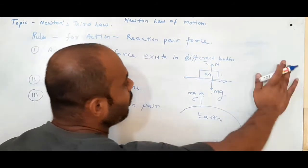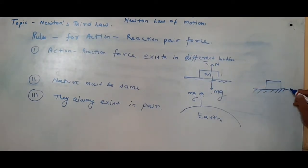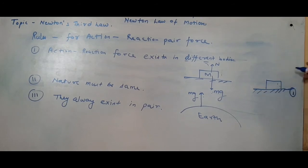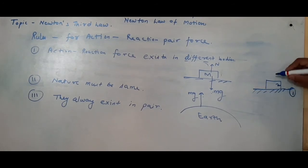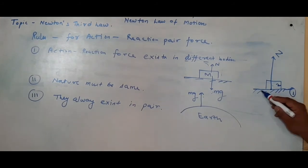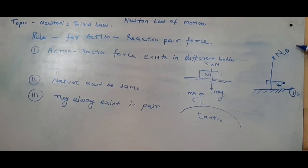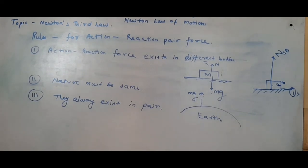Similarly, for normal reaction: let's label the surface as body 1 and the block as body 2. The surface exerts a normal reaction on the block — that is normal reaction by surface on block. And the block also exerts a normal reaction on the surface — that is normal reaction by block on surface. So we can write this as force from body 1 on body 2, and the reaction as force from body 2 on body 1. These form the action-reaction pair.